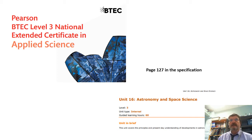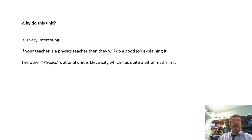It's Unit 16 Astronomy and Space Science, 60 guided learning hours. If you're doing the extended certificate, note that Unit 3 is 120 guided learning hours and worth twice as much. Nevertheless, there is a lot of work in this one, as there are in all of the other optional units as well.